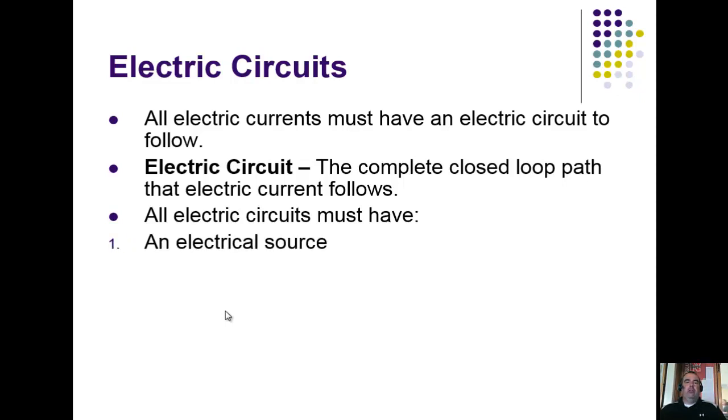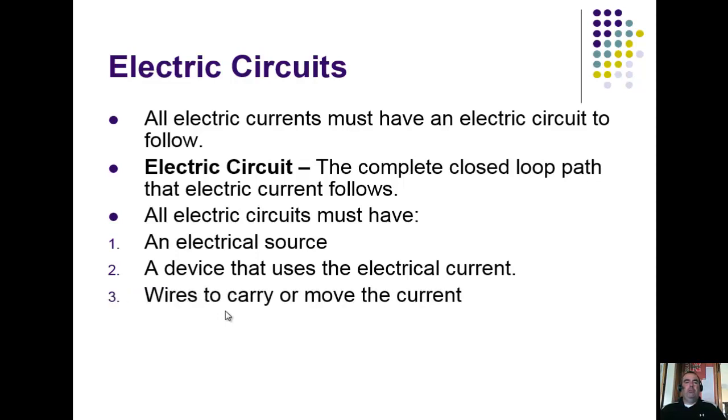Number one is an electrical source—batteries, outlets, generators, things like that. Number two, you've got to have some device that's going to be using that current, whether it be a computer, TV, cell phone, things like that. Number three, you have to have wires that are going to carry that current from the electric source to the device being used. And the last thing is you have to be able to turn it on and off—some sort of switch.